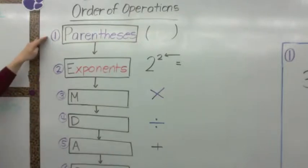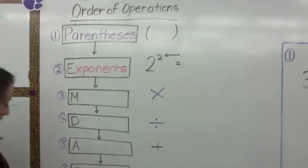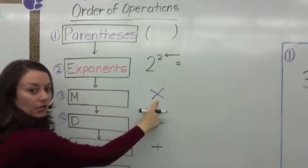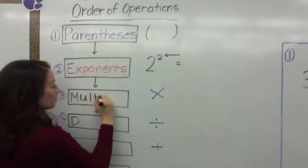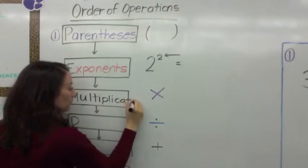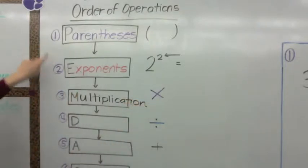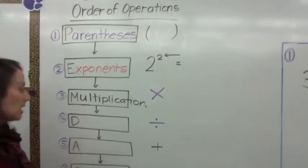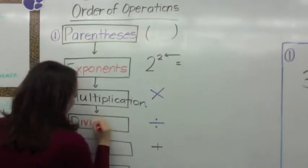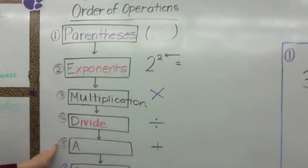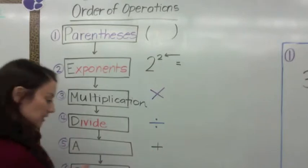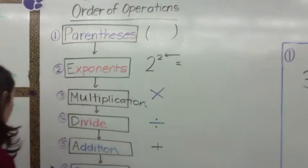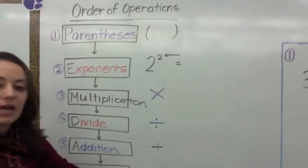What does M stand for? M stands for multiply, so the next step would be multiplication. This is 'purple elephants may destroy' — what does D stand for? D is division, so you will divide. Then A — you're going to do addition. And step six is going to be if you see the subtraction symbol.